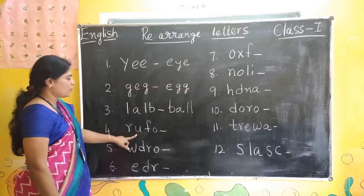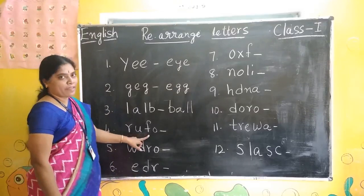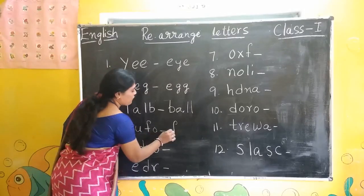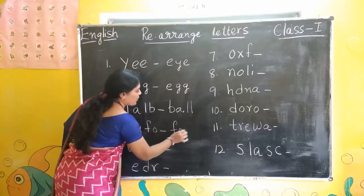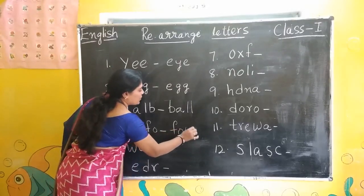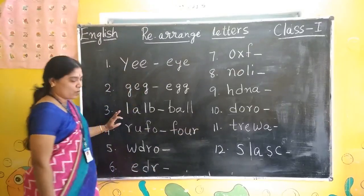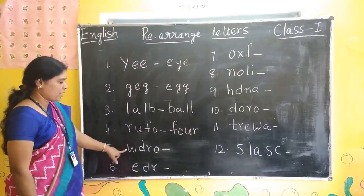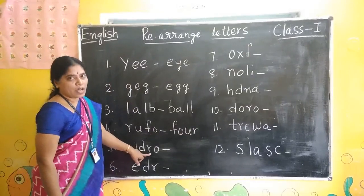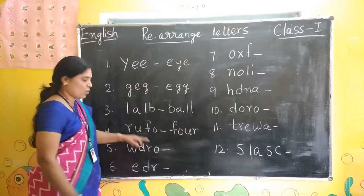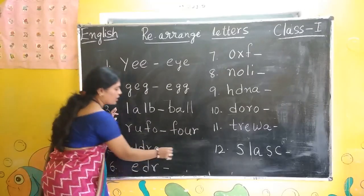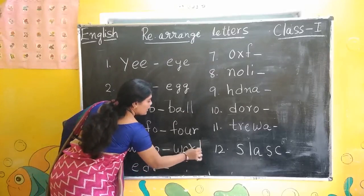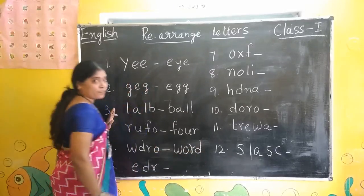R, U, F, O — rearranged: F, O, U, R. Four. Next: W, D, R, O — rearranged: W, O, R, D. Word.